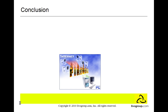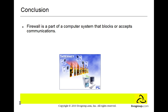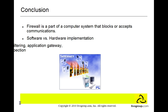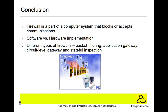In today's high-tech network environment, it is important to install firewalls to protect your data and systems from intrusions. Implementing firewalls is easier now that you know that a firewall is part of a computer system that blocks or accepts communications, whether to implement a software or hardware firewall, and the different types of firewalls: packet filtering, application gateway or proxies, circuit level, and stateful inspection. This concludes the introduction to firewalls. Thank you very much for listening.